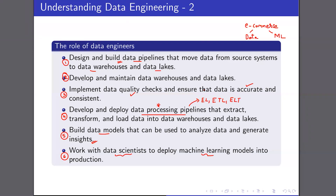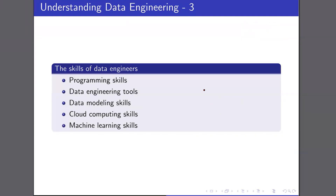This covers the role of the data engineer. Coming to the skill set a data engineer should possess: definitely good programming skills are required. The most desired programming languages are Python and Java — the two most widely used in building data processing pipelines. Because of the storage involvement, SQL skills are also required to operate with databases. These three can be considered the primary programming skills for a data engineer.